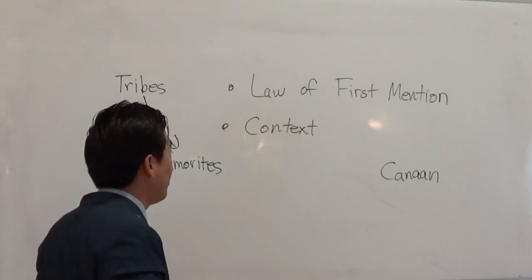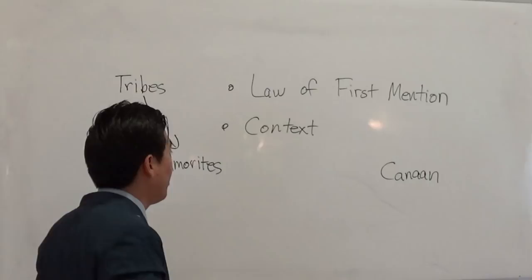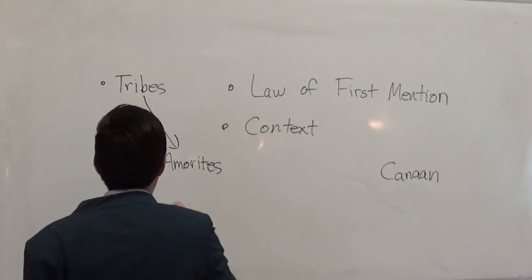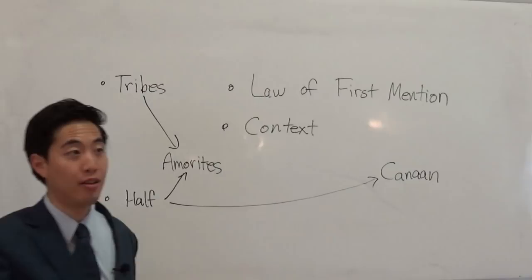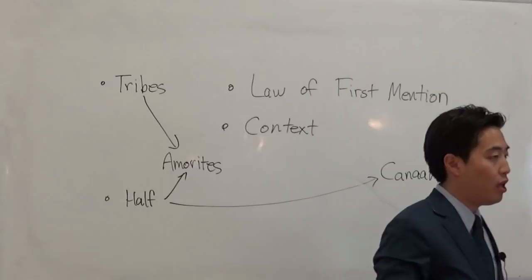Now, if this is the first time it's mentioned, then the answer is this. The answer is that it could be that the reason why it's half-tribe of Manasseh is because only half of them want to stay in that land, whereas the other half want to go to Canaan. So if you look at other verses in the Bible where it talks about half-tribe of Manasseh, now what will be very interesting is this.